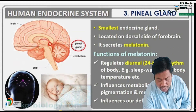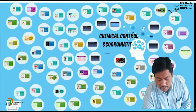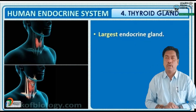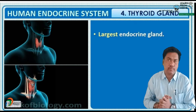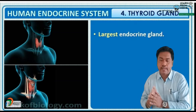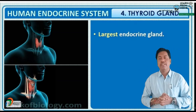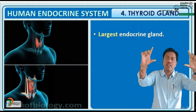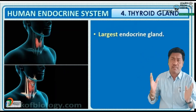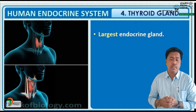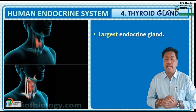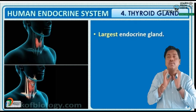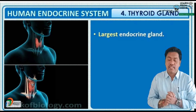Next we have to talk about the thyroid gland. The thyroid is the largest endocrine gland in our body. Its weight is 15 grams in males and 13 grams in females. It is also known as the butterfly-shaped gland. The thyroid gland is located in the neck area, above the trachea.